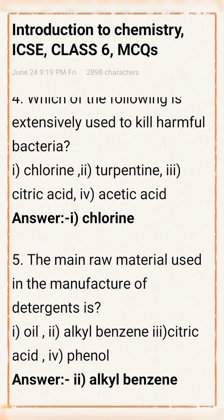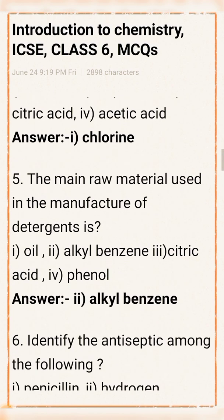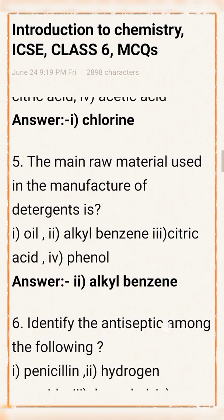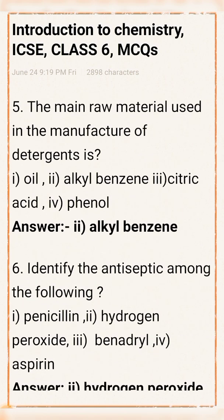Question number 5: The main raw material used in the manufacture of detergent is? Option 2: Alkyl benzene. Option 3: Citric acid. Option 4: Phenol. Answer: Option 2, alkyl benzene, is the right answer.